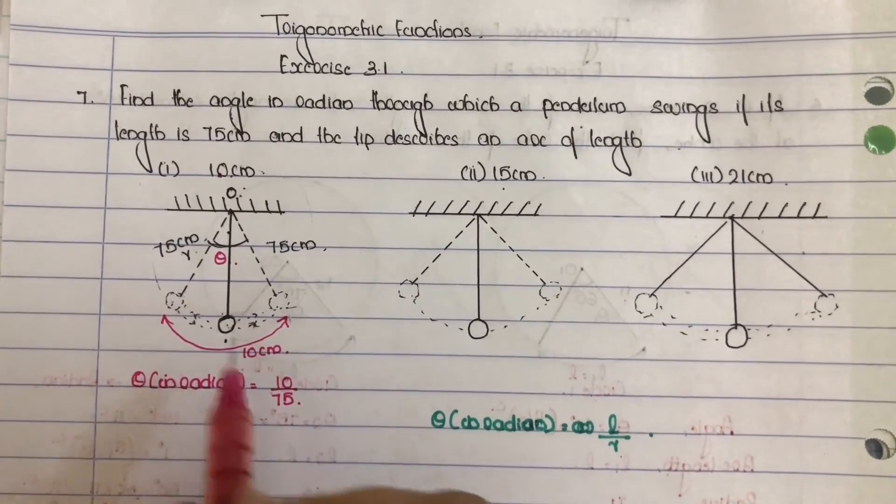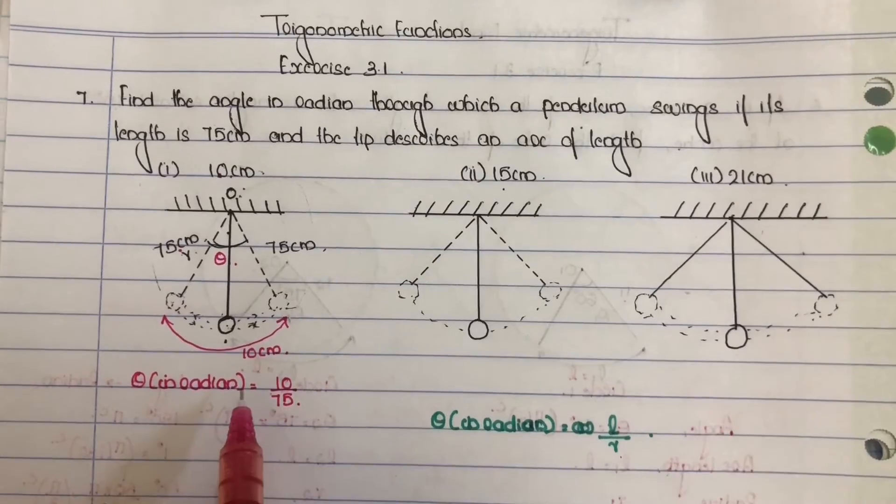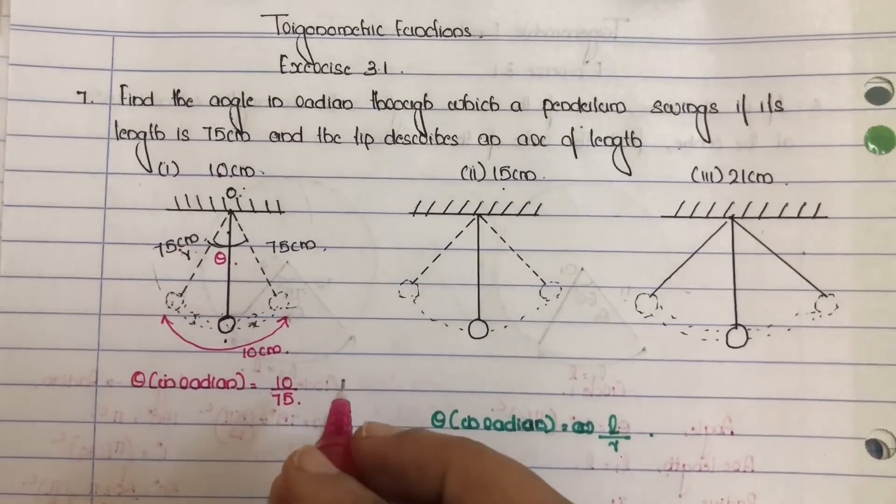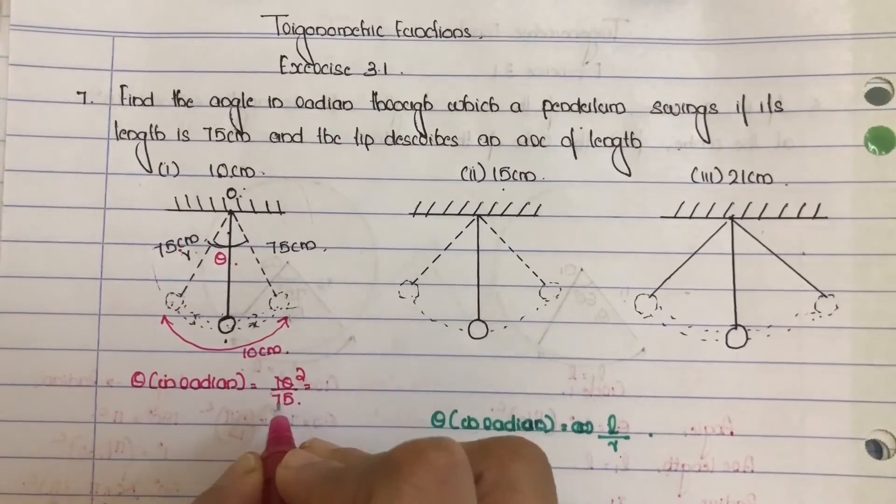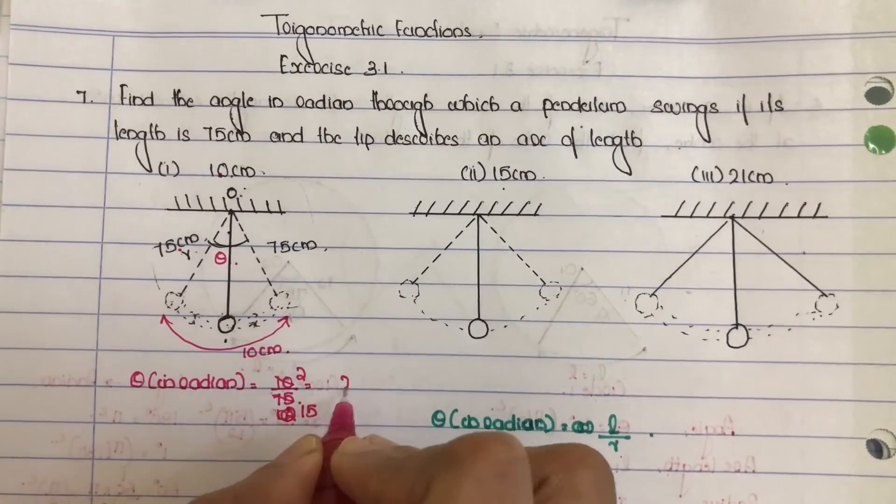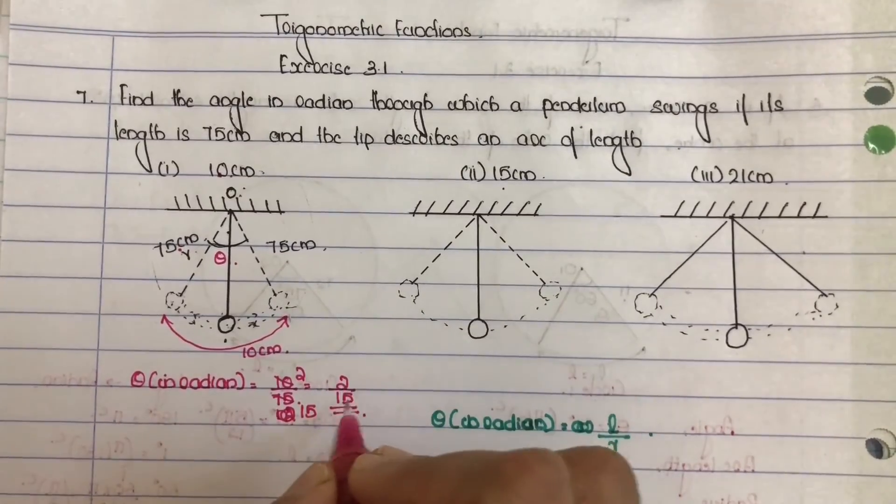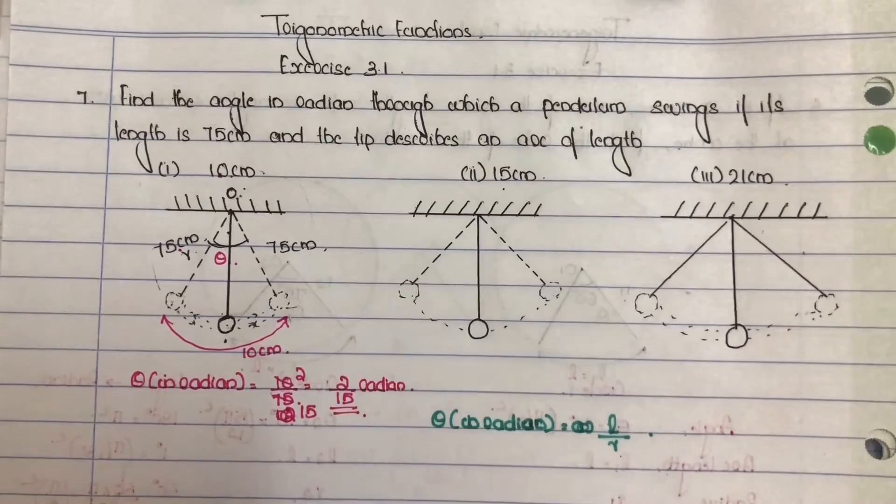The arc length and radius, L and R, should be in the same unit. Here both are in centimeter, same unit. 2 by 50. In the first case the angle theta in radian is 2 by 50 radian.